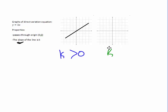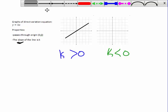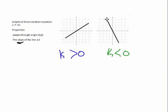Over here, if k is negative or less than 0, then it's going to go through the origin still, right? But the slope is negative, so it's going to have a negative slope. So, it'll do something like this.